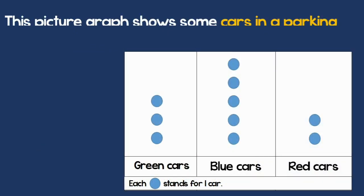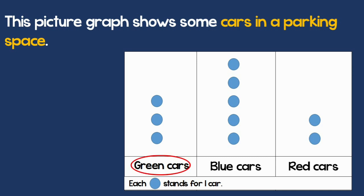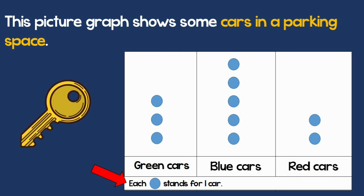This picture graph shows some cars in a parking space. There are some green cars, some blue cars, and some red cars. Let's read the key. Each mark stands for one car. That means that if I have three marks for the green cars, there are only three green cars.